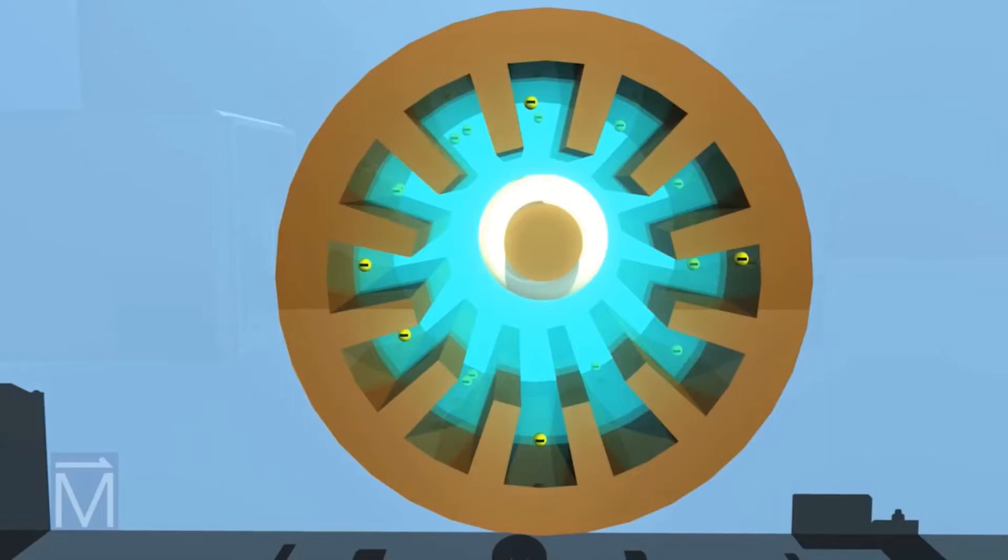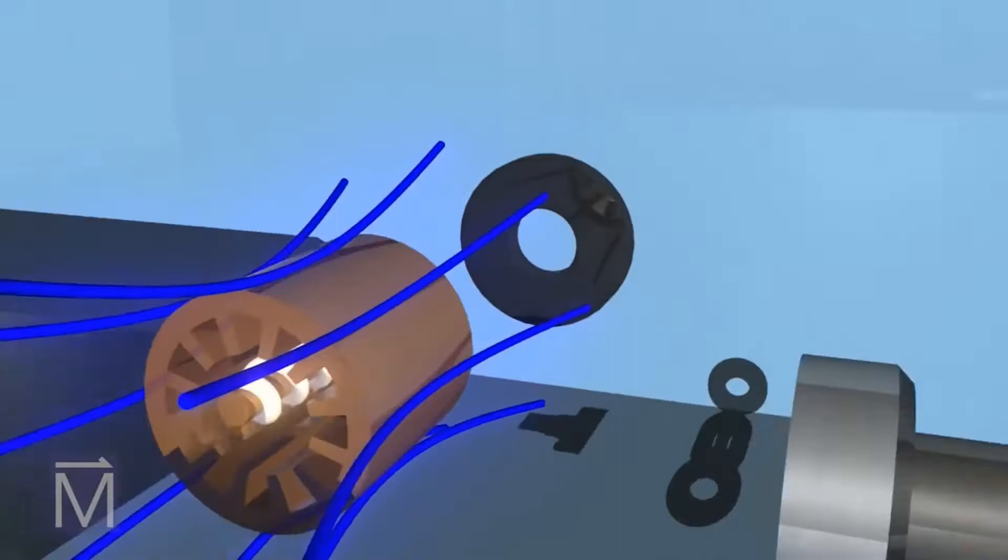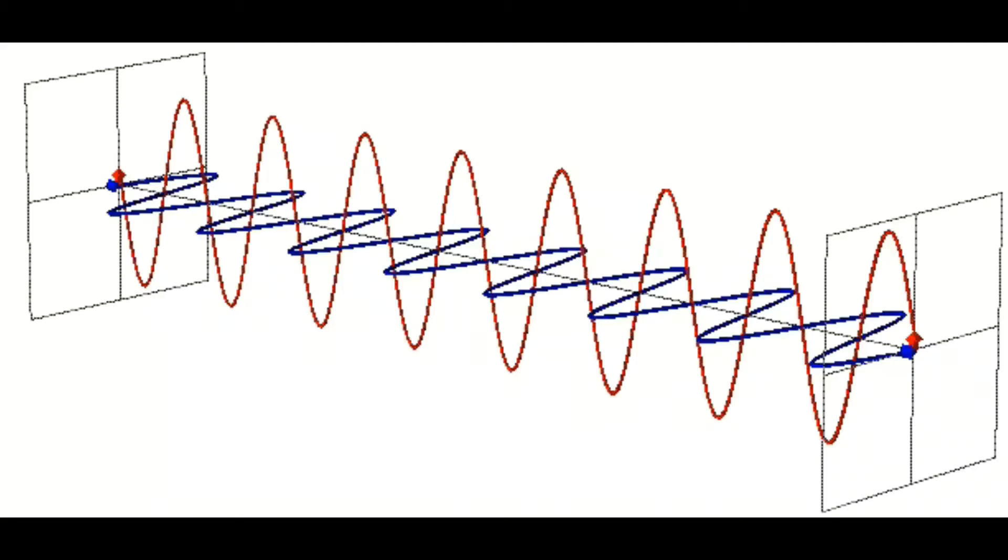Crossed electron and magnetic fields are used in the magnetron to produce the high power output required in radar equipment and in microwaves. These produce a wave that is transverse in nature and also alternating in nature.